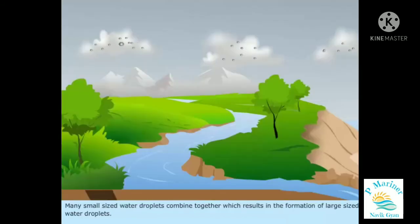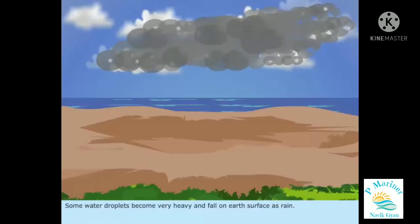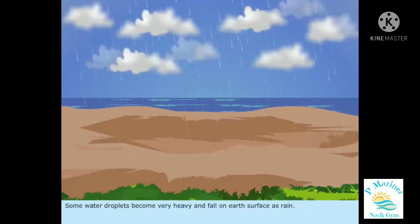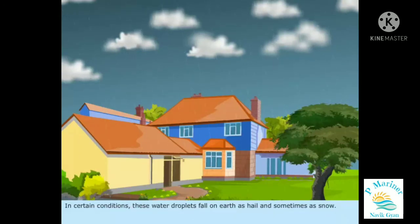Many small sized water droplets combine together, which results in the formation of large sized water droplets. Some water droplets become very heavy and fall on earth's surface as rain. In certain conditions, these water droplets fall on earth as hail and sometimes as snow.